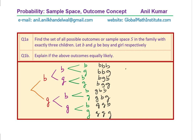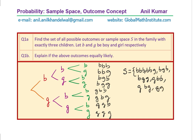We write the sample space S as the set: {BBB, BBG, BGB, BGG, GBB, GBG, GGB, GGG}. Counting them: 1, 2, 3, 4, 5, 6, 7, 8 — so there are 8 outcomes in all, which are all listed in the sample space. B represents boy and G represents girl, so BBB means all boys.